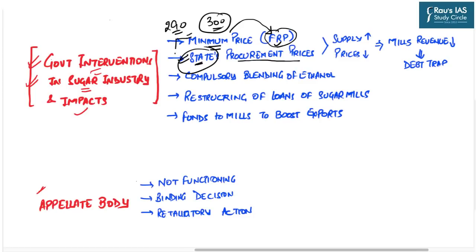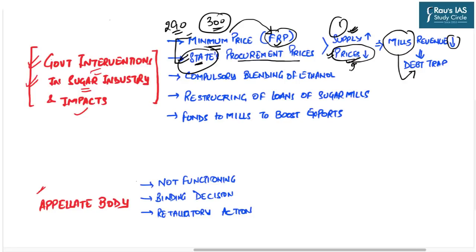These cumulative subsidies encourage farmers to grow more sugarcane, increasing supply and causing a price crash. When sugarcane prices fall, the revenue of sugar mills also reduces, leading many mills into a debt trap. The negative impacts of the present subsidy system are: first, it distorts supply-demand dynamics; second, it causes price crashes domestically and internationally; third, it invites WTO disputes; and fourth, falling mill revenues trap sugar mills in a debt cycle, deteriorating their productivity and profits.